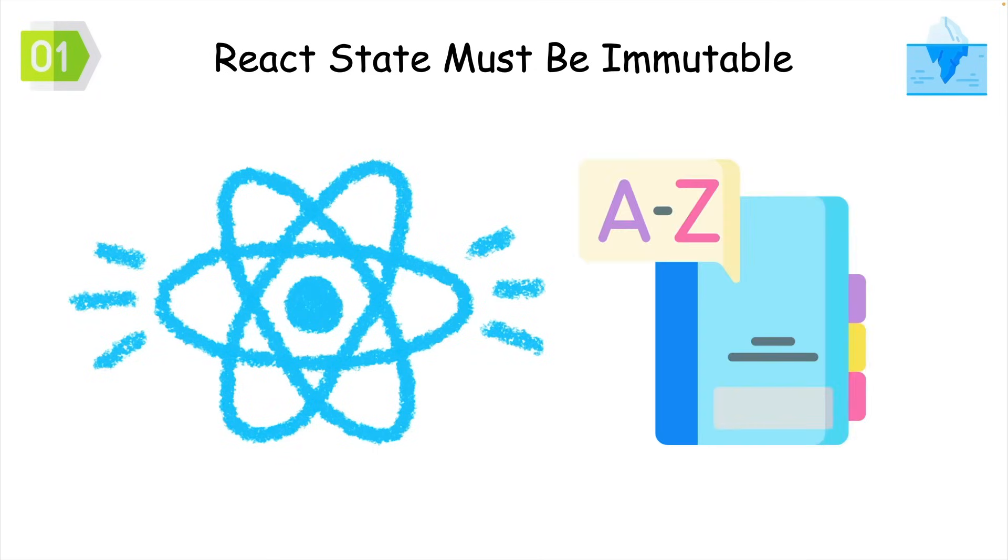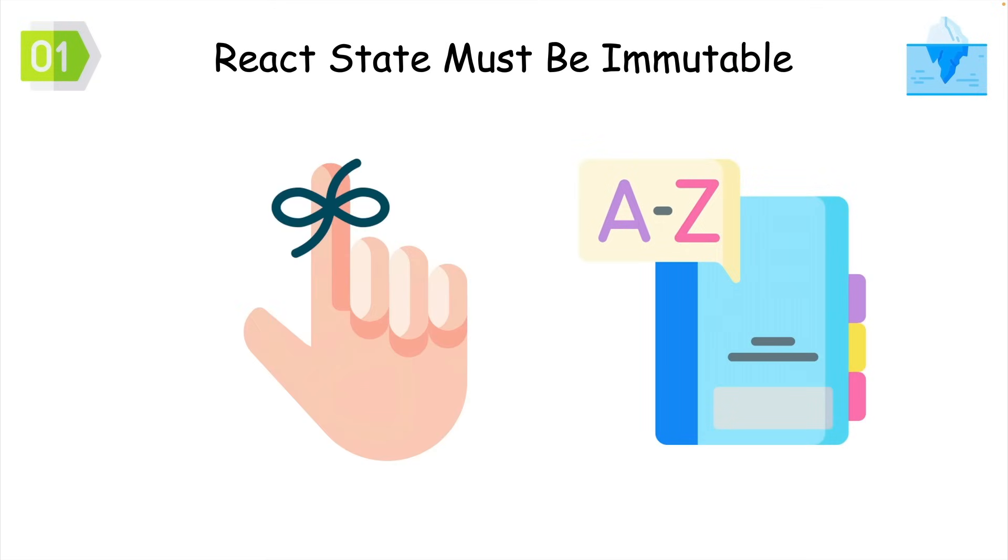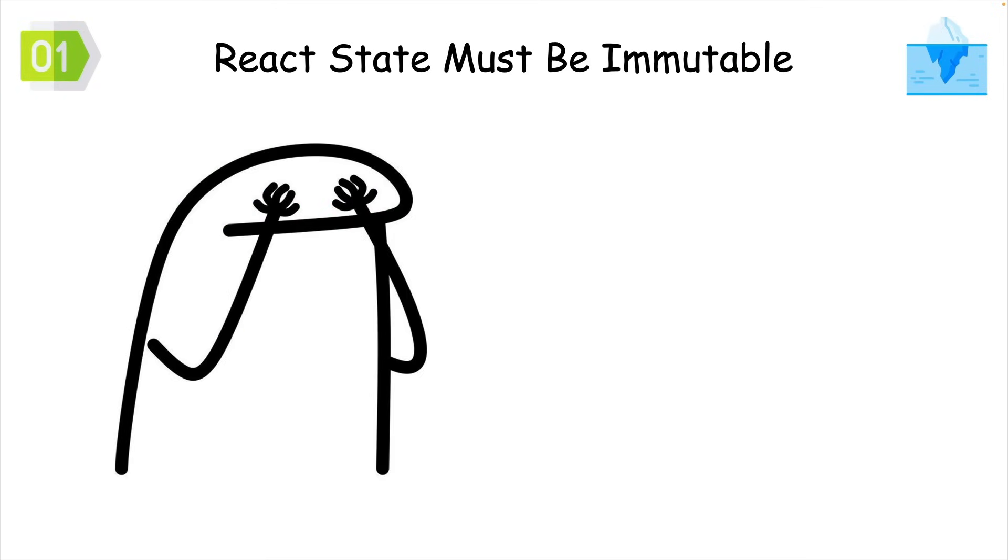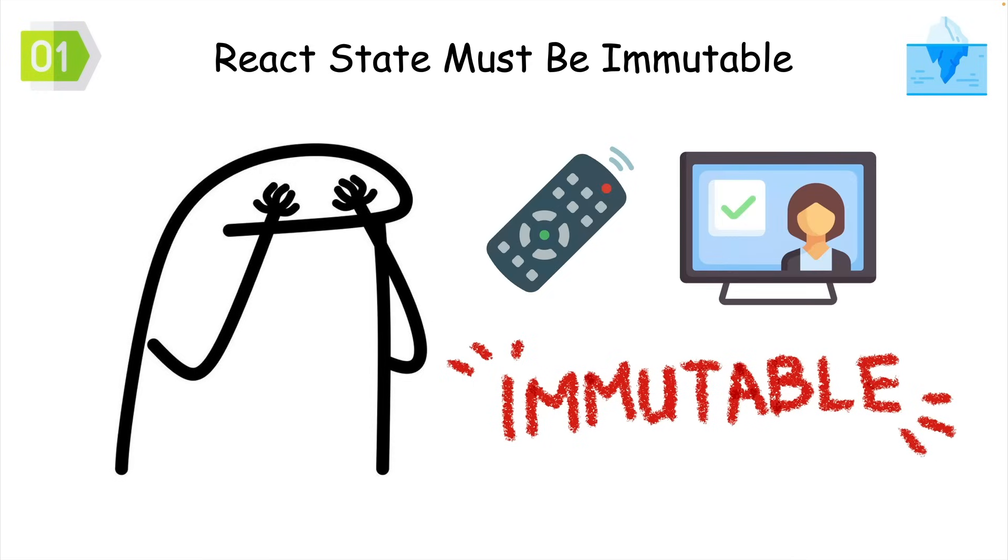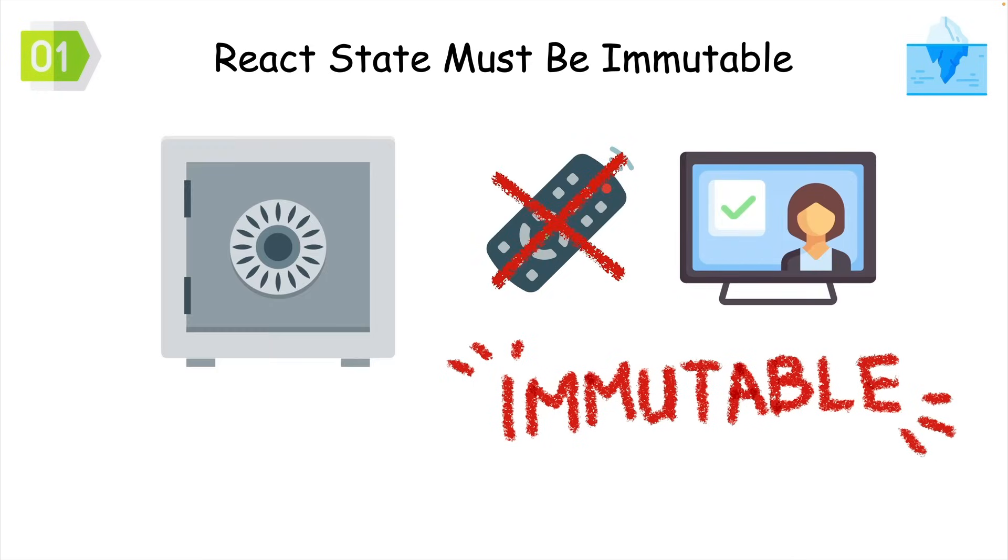React seems to come with its own dictionary of terms for you to remember. One term I really didn't understand as a beginner was immutable. Not like muting a remote, immutable like you can't change React's state by mutating it.